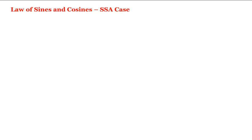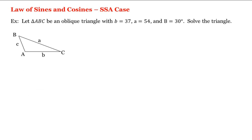Let's work with the law of sines and cosines. For example, let triangle ABC be an oblique triangle with little b equal to 37, little a equal to 54, and capital B equal to 30 degrees. Let's solve the triangle — that is, we're going to find all the missing sides and angles. So let's mark on our figure the given information: b is equal to 37, a is equal to 54, and capital B is 30 degrees.